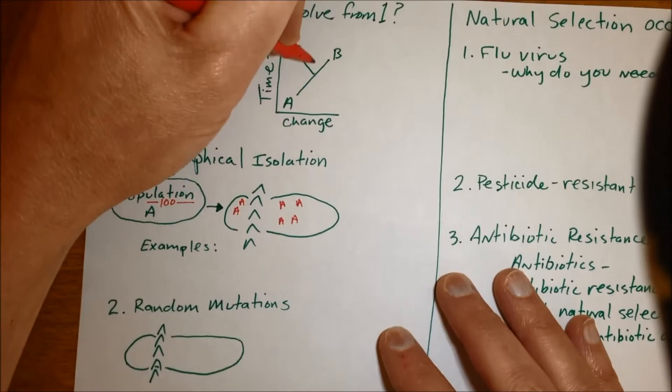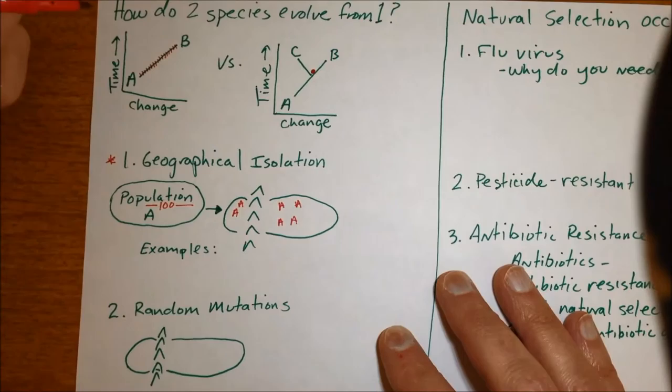This is the event that actually happens right here in time that causes A to start on the path going into two new species.